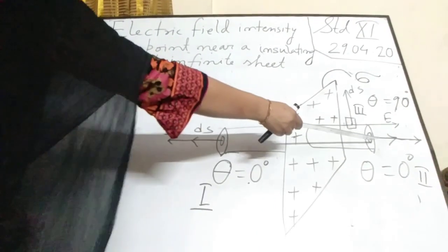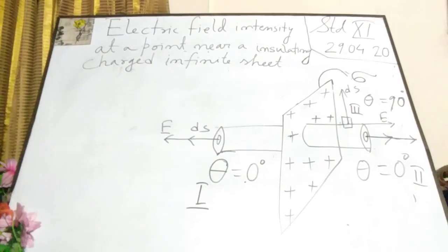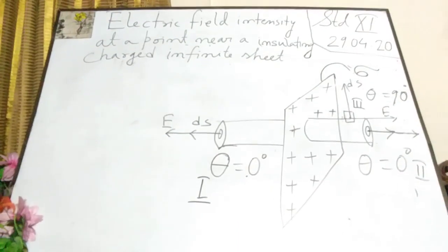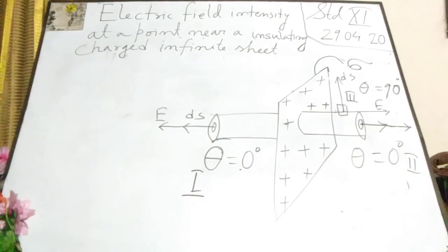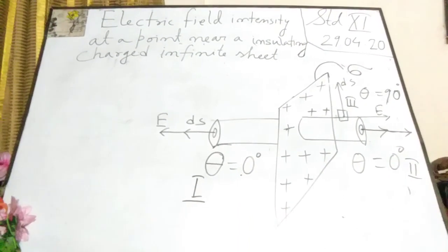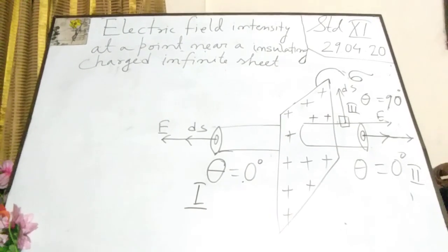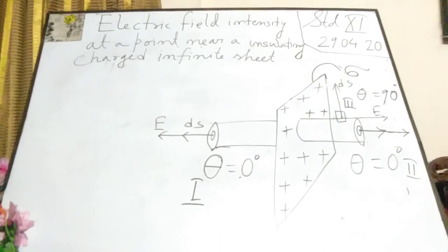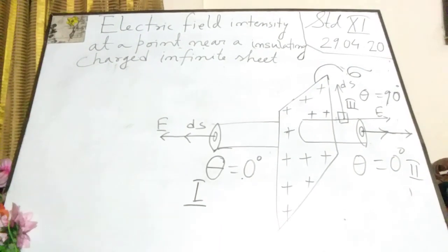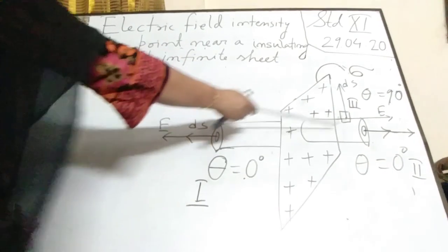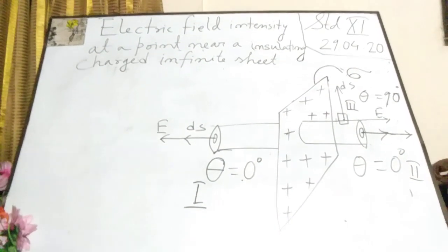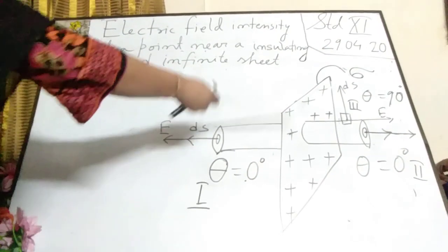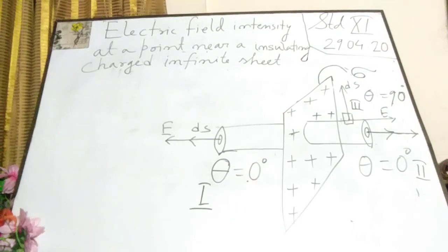We will find out the electric field intensity at this point. I have written here 'infinite sheet.' The question may arise in your mind: infinite sheet means the sheet has no limit — no starting, no ending, its size is infinity. Not quite. Why I have written 'infinite' is because the distance at which I will find out the electric field intensity is very, very less than the size of the sheet. That is why it is written as infinite sheet.